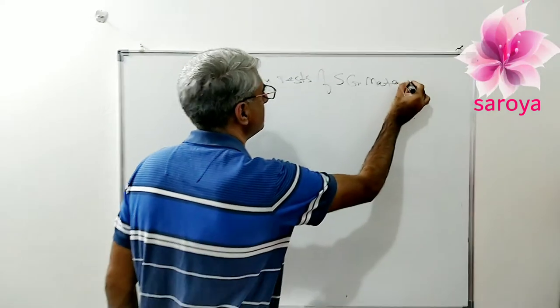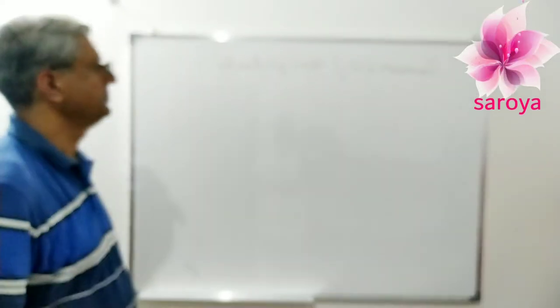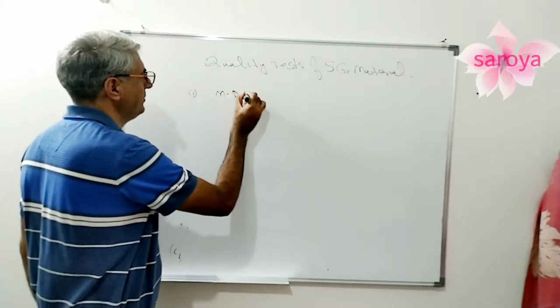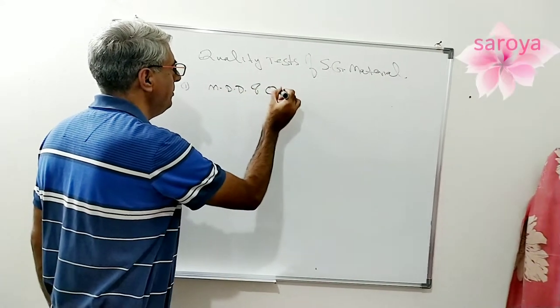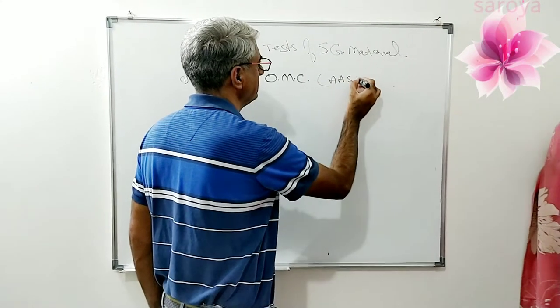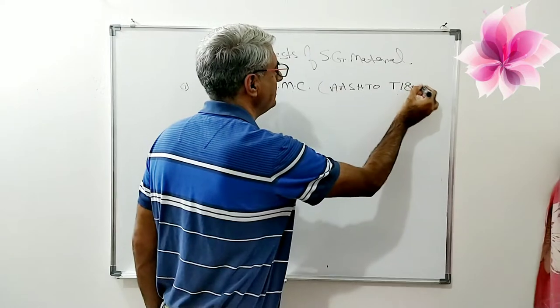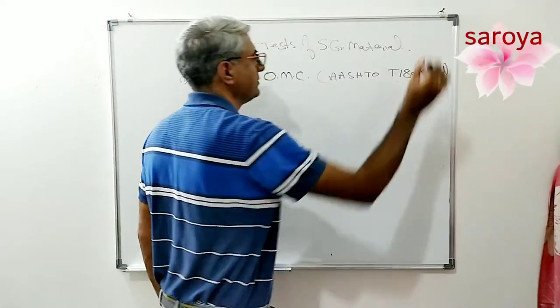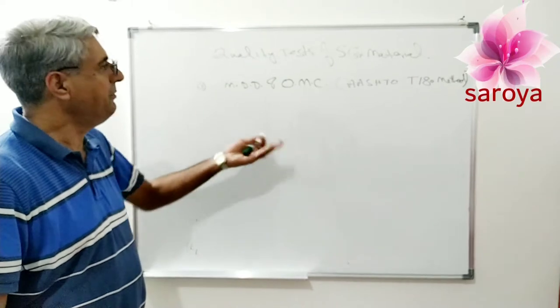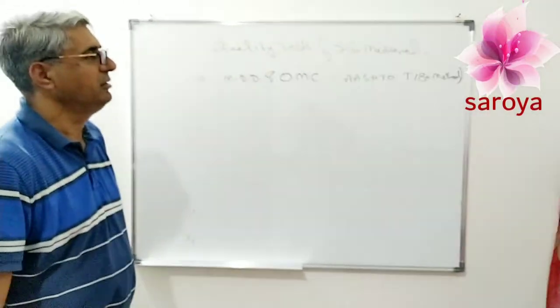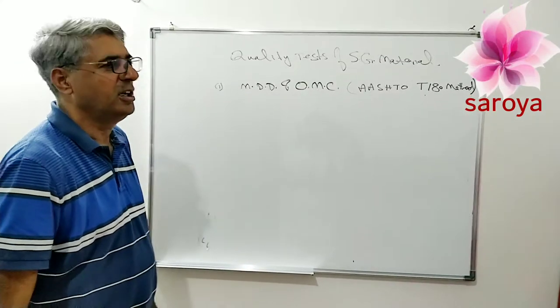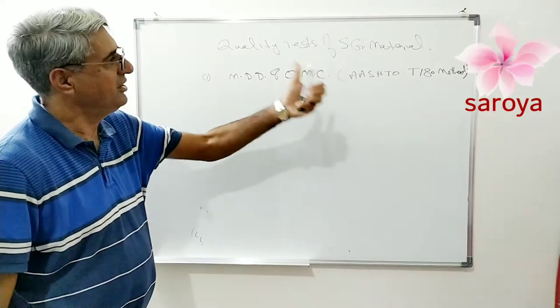First thing, I will find out maximum dry density and optimum moisture content in my laboratory by AASHTO T180. This will give me what should be the maximum dry density. If the value is more than 1.85, this will be taken mostly. We have taken this value to be 1.89 or 1.9. We can see it is having a strong value.